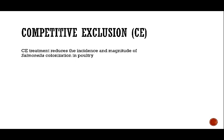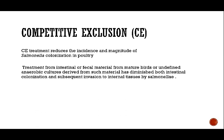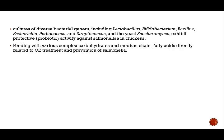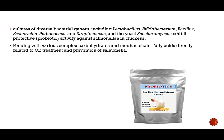Another preventive approach is competitive exclusion, which acts like a probiotic. Treatment with intestinal or fecal material from healthy birds — or unidentified aerobic cultures derived from source material — can diminish Salmonella colonization and its subsequent invasion into internal tissues. Cultures of probiotic bacteria such as Lactobacillus, along with various carbohydrates and medium-chain fatty acids, can enhance competitive exclusion and prevent Salmonella colonization.